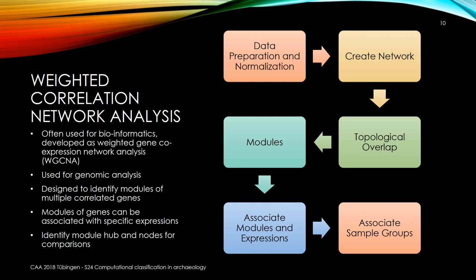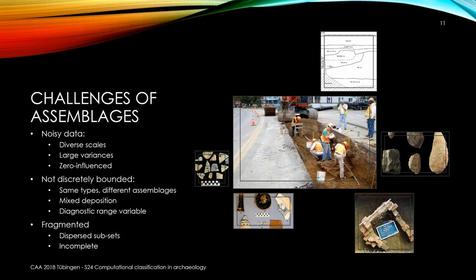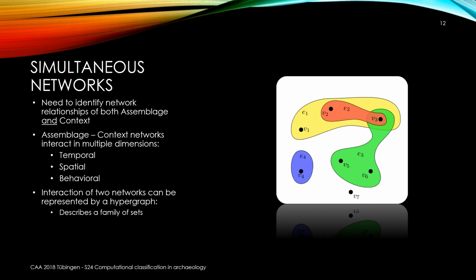What I'm proposing is not all that dissimilar. We have very noisy data, partial sets, partial order sets, and multiple overlapping systems. What we're actually dealing with is partitioning of multiple simultaneous networks. The modification to the weighted gene co-expression network analysis is that where they're dealing with one network, we're actually dealing with two: an assemblage network and a contextual network — a spatial network and an assemblage network. But the process is essentially the same; you do it for both, then cross-correlate the two.